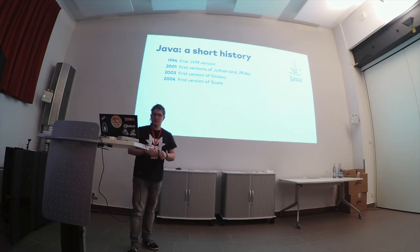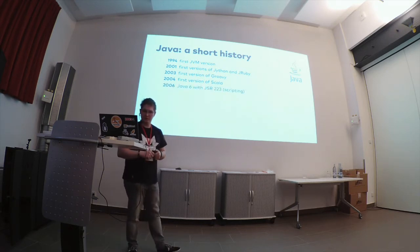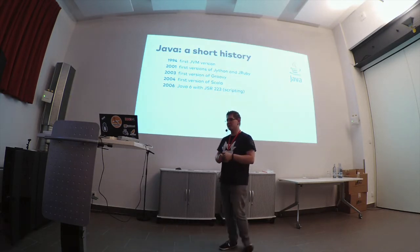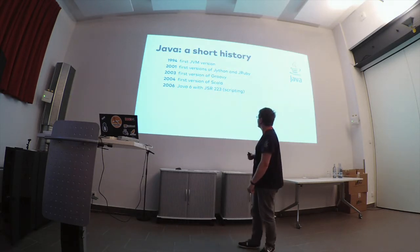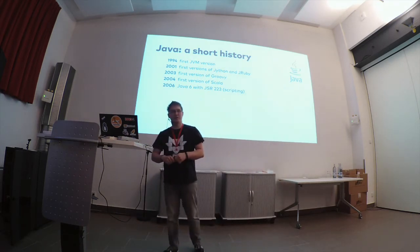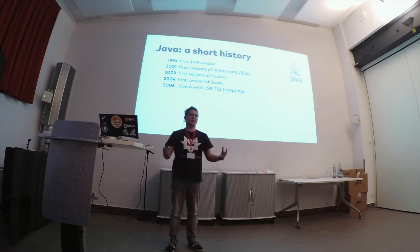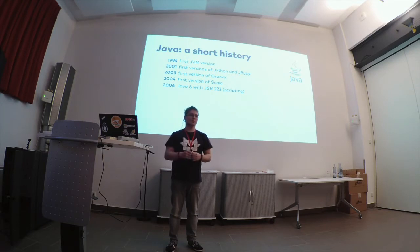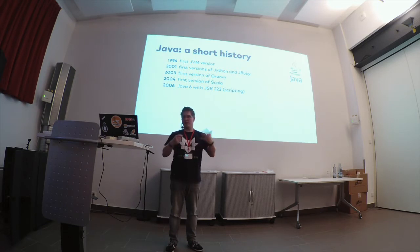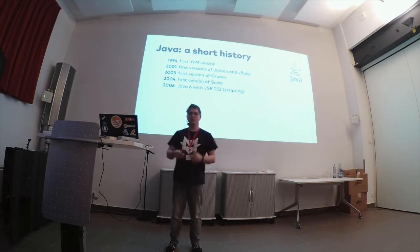Two years later, in 2006, there was a Java 6 release. Java 6 was notable in that it had JSR-223, also known as the Scripting API, built-in. The Scripting API basically gave you a uniform interface for running arbitrary scripts on your JVM. Library authors could provide scripting languages, and then you could write scripts in those languages, and through this uniform API you could just add a programming language to your Java program.